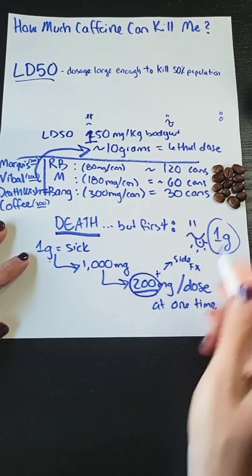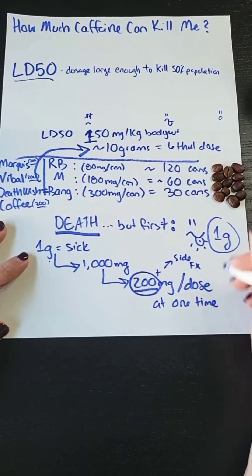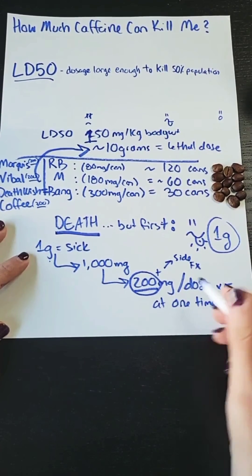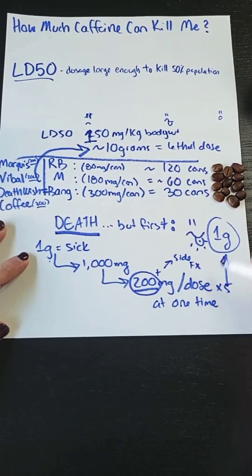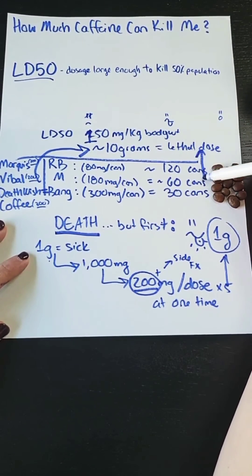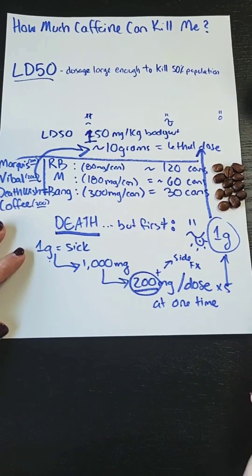So even that's well below the one gram mark, so it would take five times the amount of caffeine you're allowed to have at one time before you feel sick, and 10 of those before you feel like you're actually going to die.